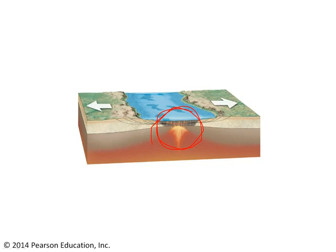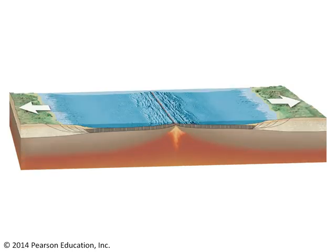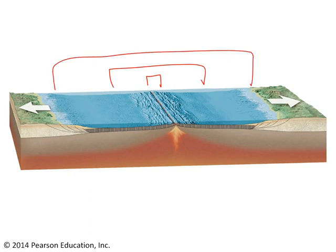Seafloor spreading has initiated here, and now we've got a proper ocean basin, even though it's young. Over time, continued seafloor spreading at this oceanic ridge will result in a wider and wider ocean basin. The two continents get further and further apart — they used to be just next to one another — and they'll continue to move further apart until something happens to close the ocean basin.